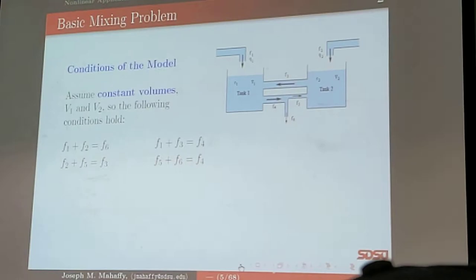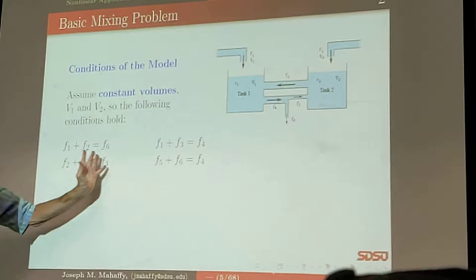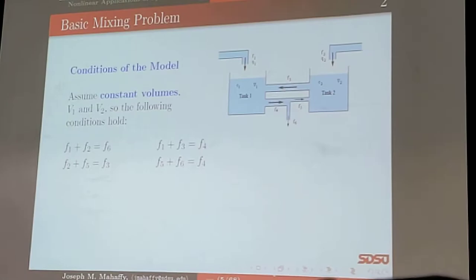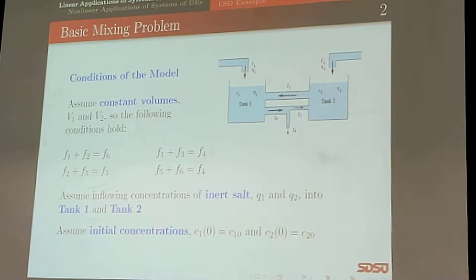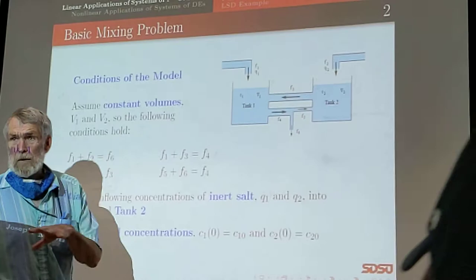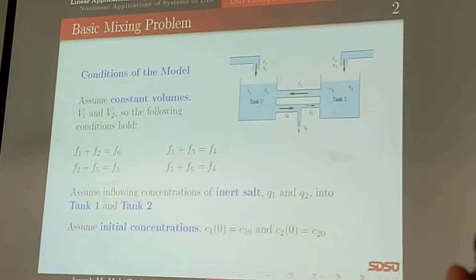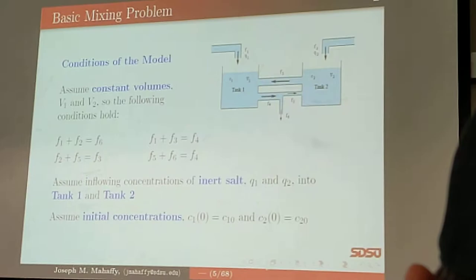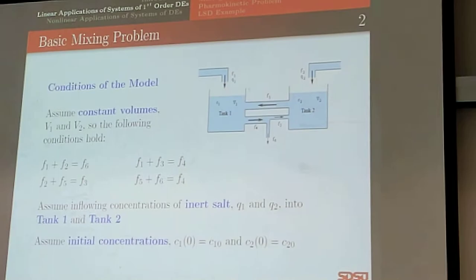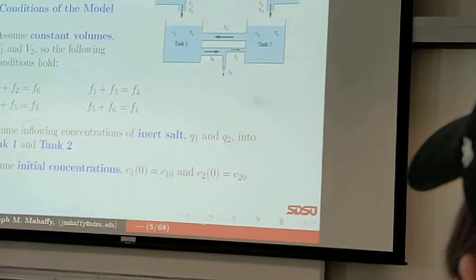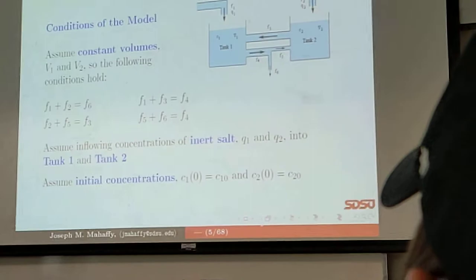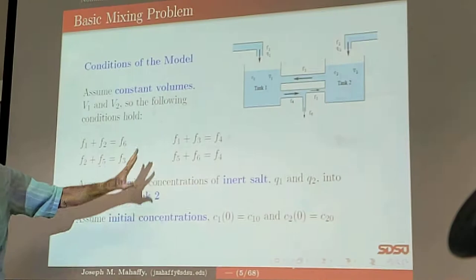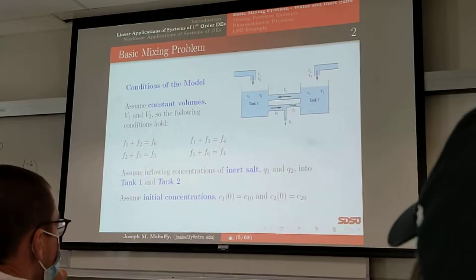So, looking at this particular one, as I said, you've got to have this. We're keeping constant volumes. So we better assume that we have nice, standard flow rates. These flow rates balance out so that we don't change the volume. Then what do we want to do? We're going to assume, again, we're assuming inert salt, that there's no reaction going on here.